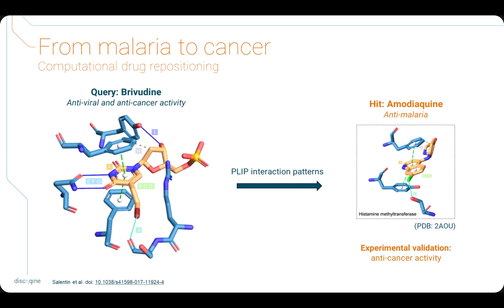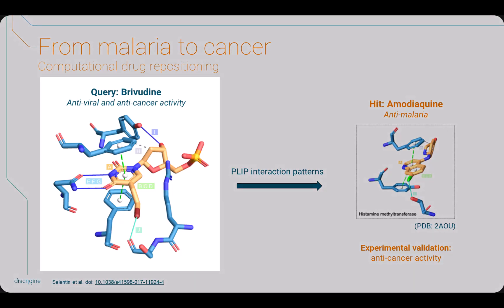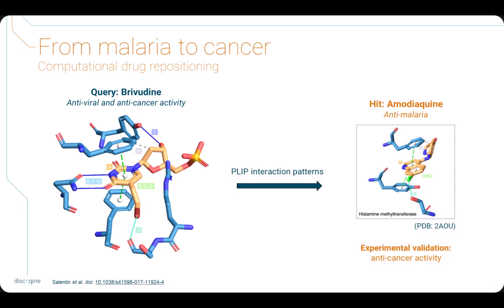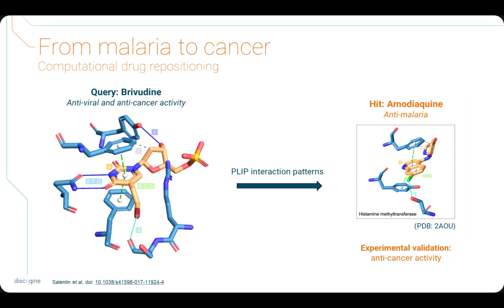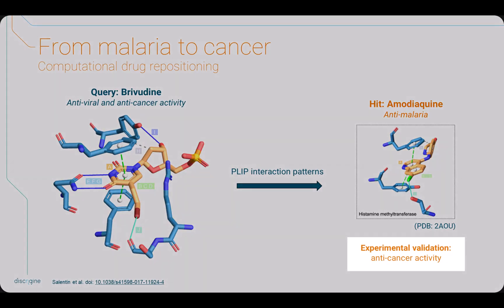In a paper by Salentine et al., they performed a drug repurposing starting from the interaction patterns of brivudine, an antiviral drug with anti-cancer activity. They found that amodiaquine, an anti-malaria drug, had a similar interaction pattern, identifying it as a potential anti-cancer drug, and also experimentally validating their findings.